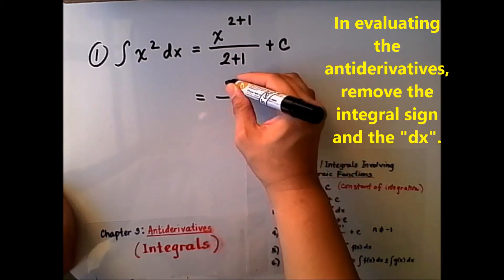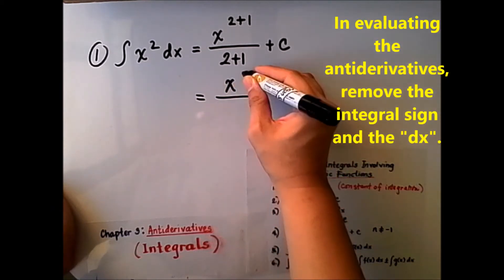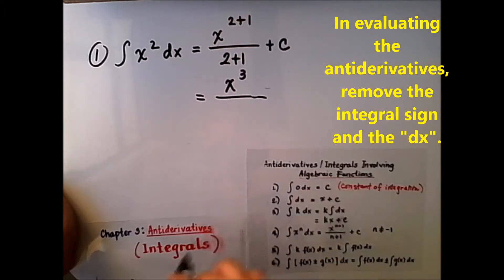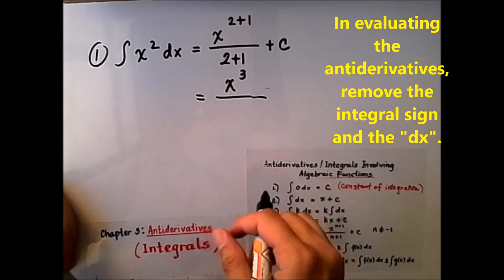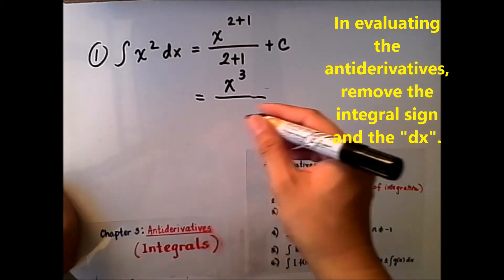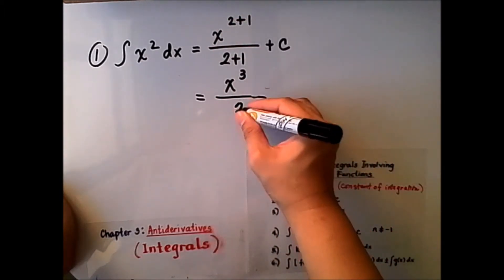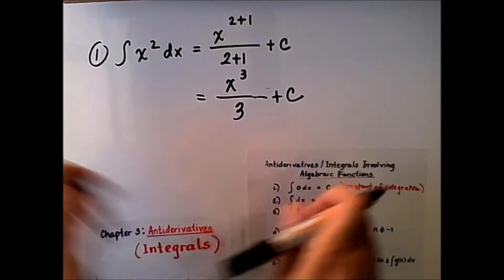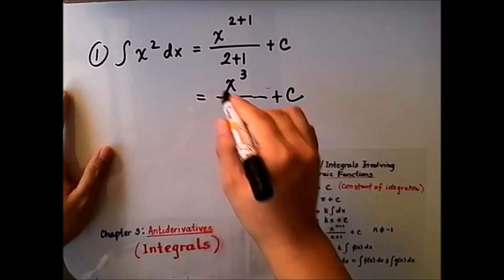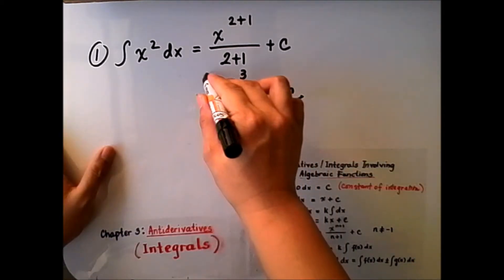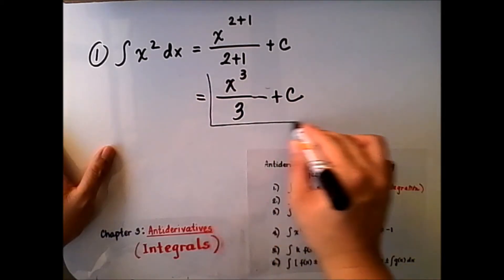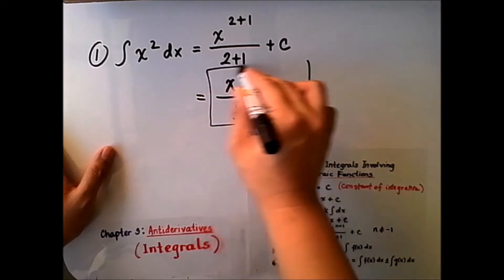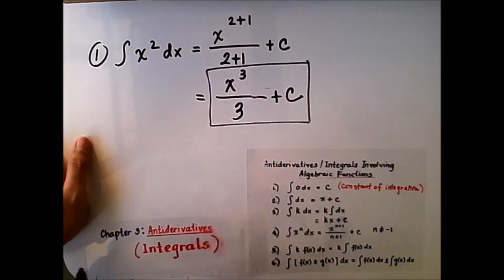If we evaluate this further, this becomes x raised to the power of 3 — because 2 plus 1 is 3 — over 2 plus 1, which is equal to 3, plus c. So that is the integral of x squared dx.